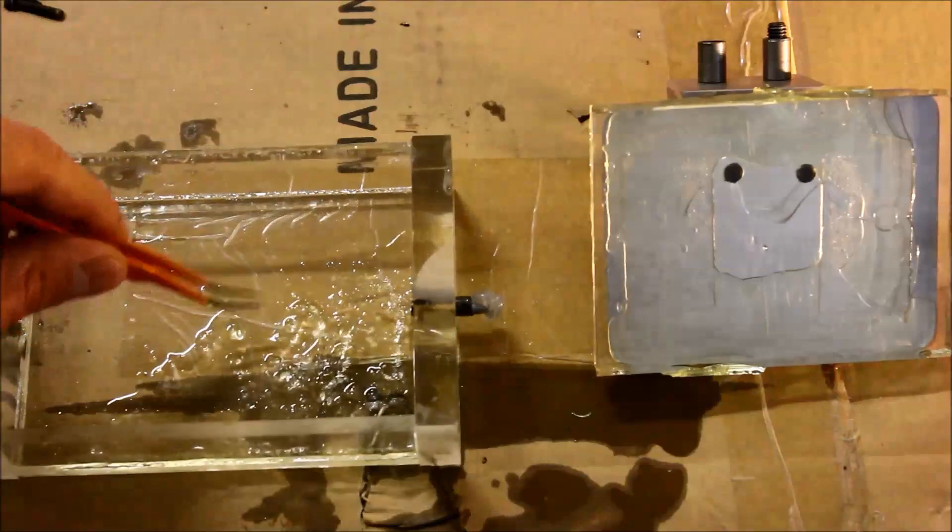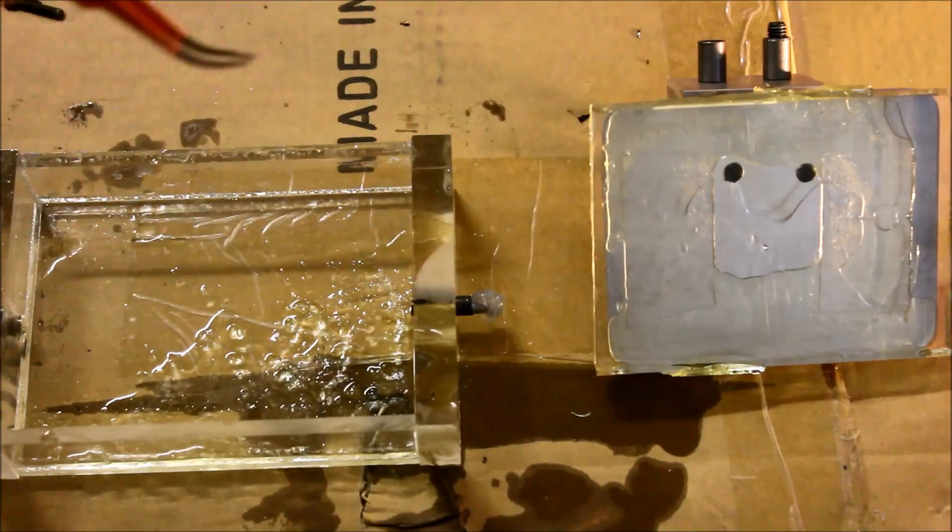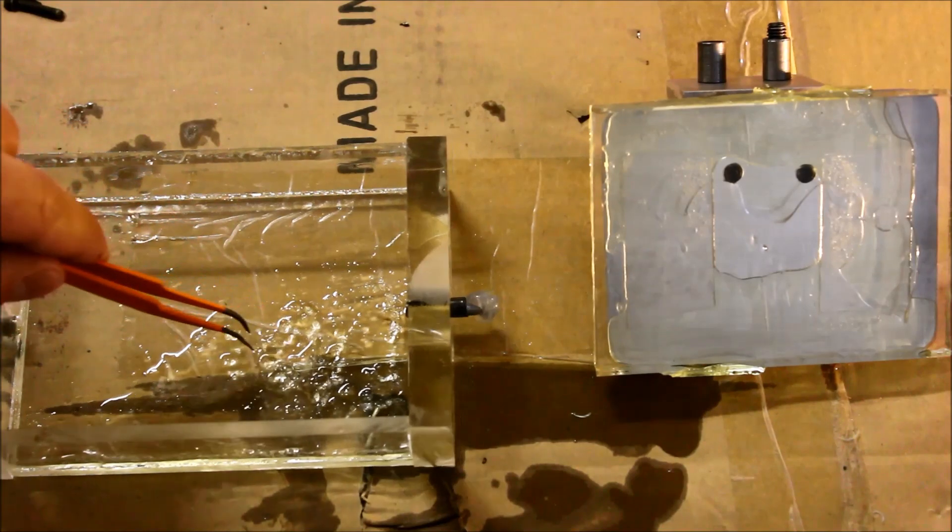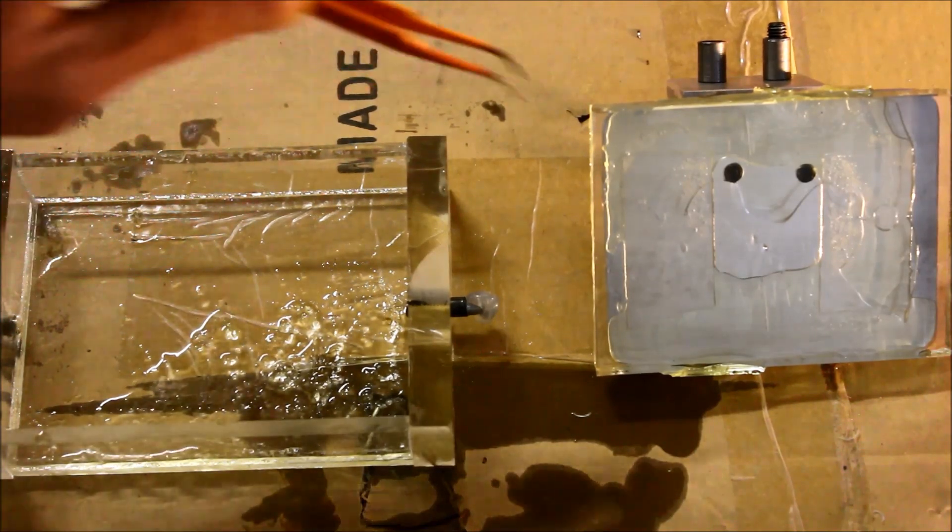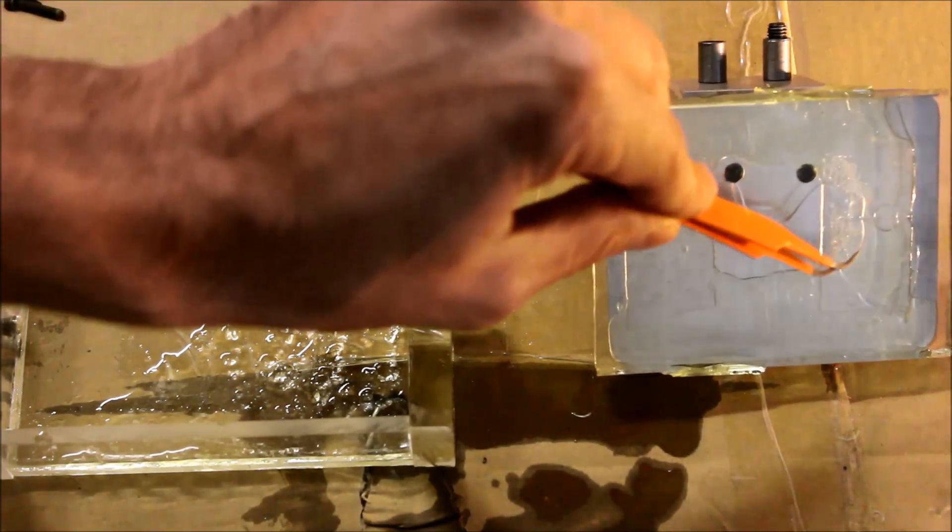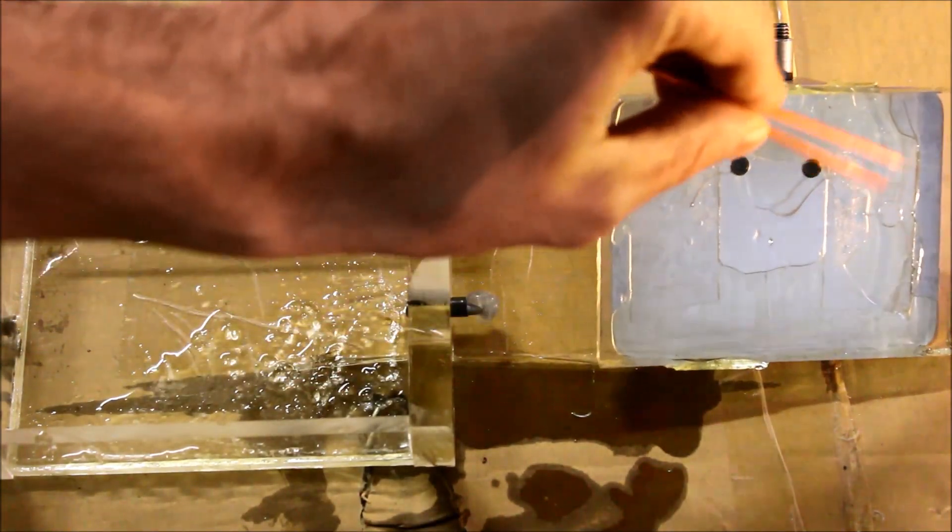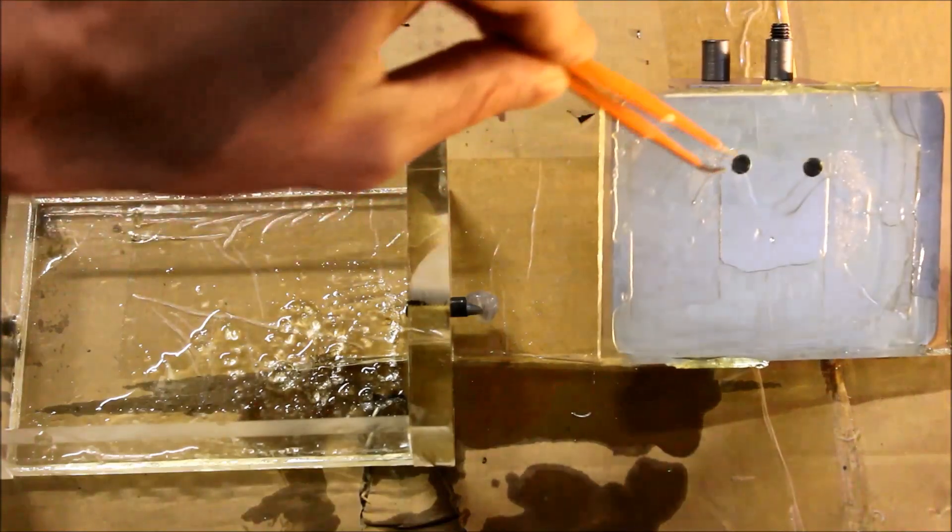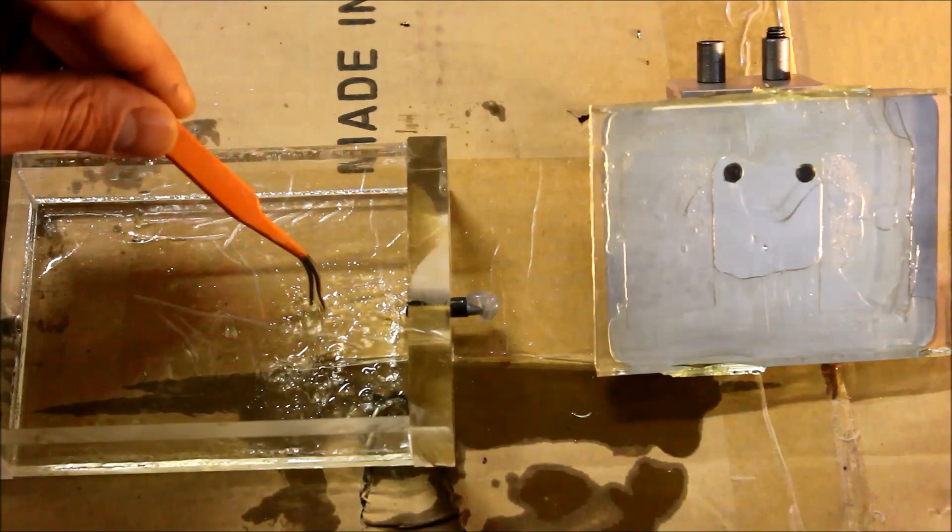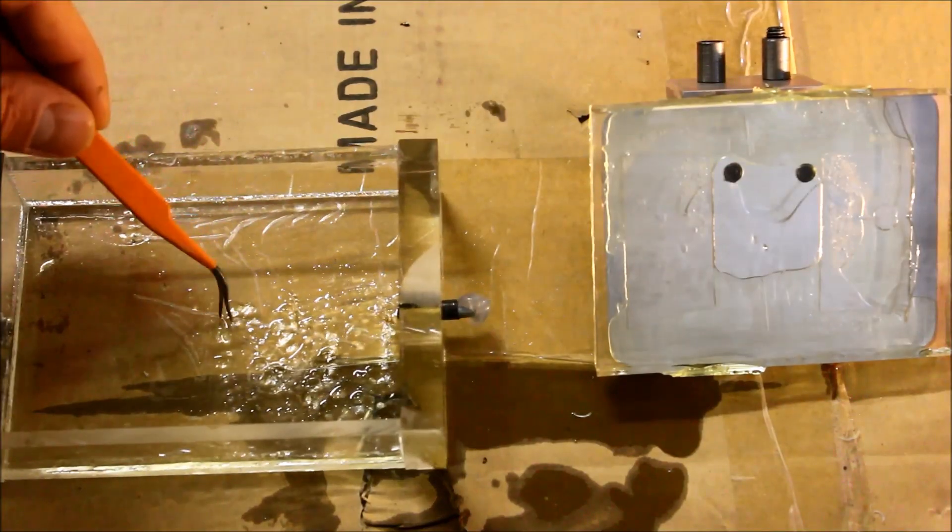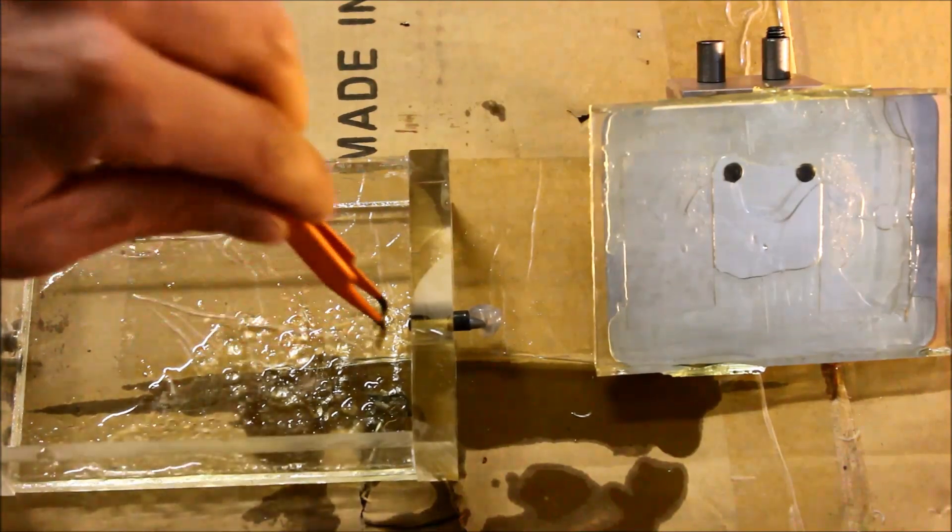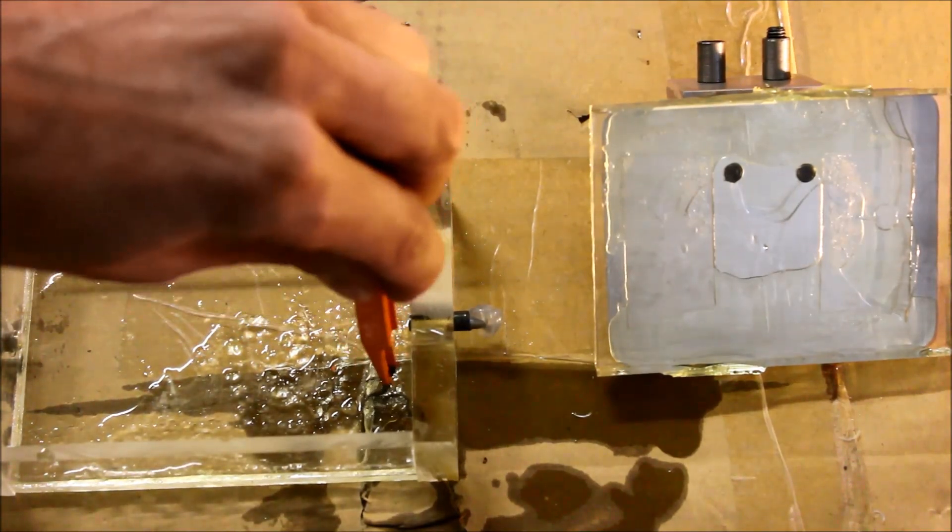Basically the problem here is it half cures to the plexi and half cures to the glass. So as you can see there, there was a bubble in here which might have affected the ratio of curing to the glass. It's really solid on the glass, but it's also pretty solid on the plexi. So I feel like there's just a better way.